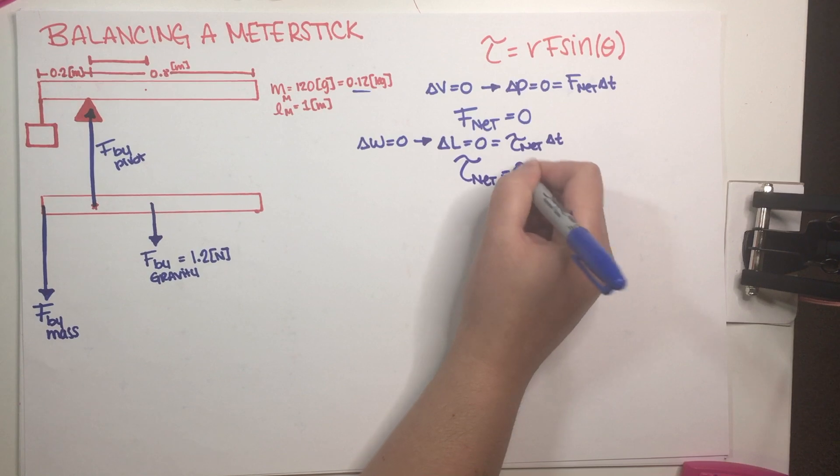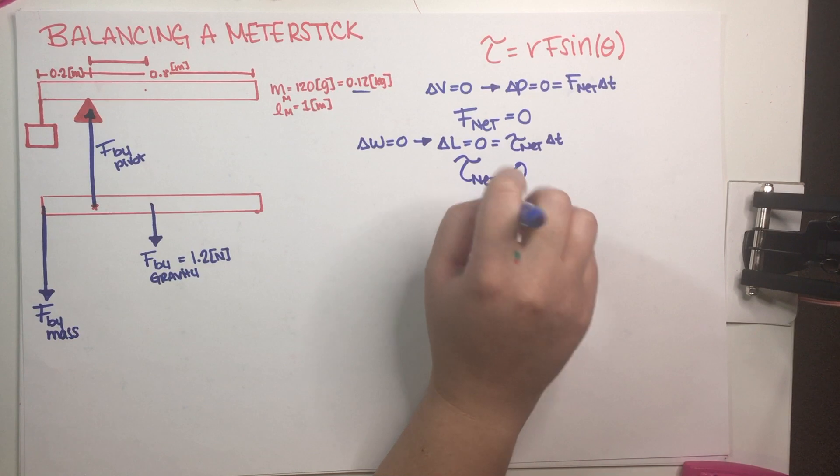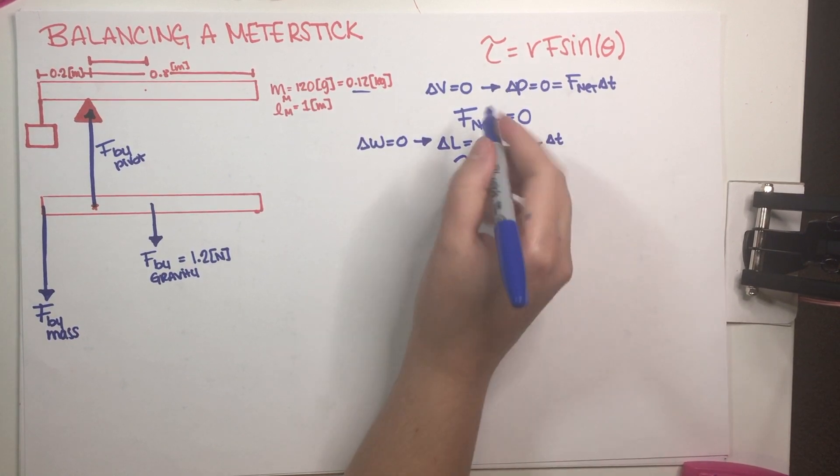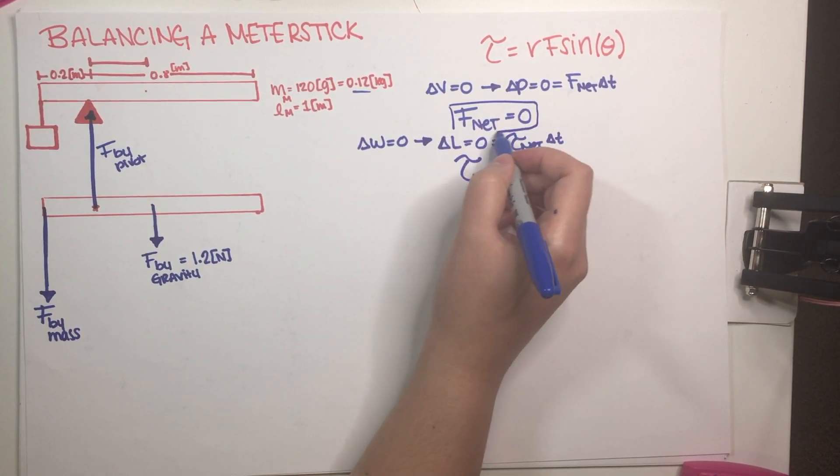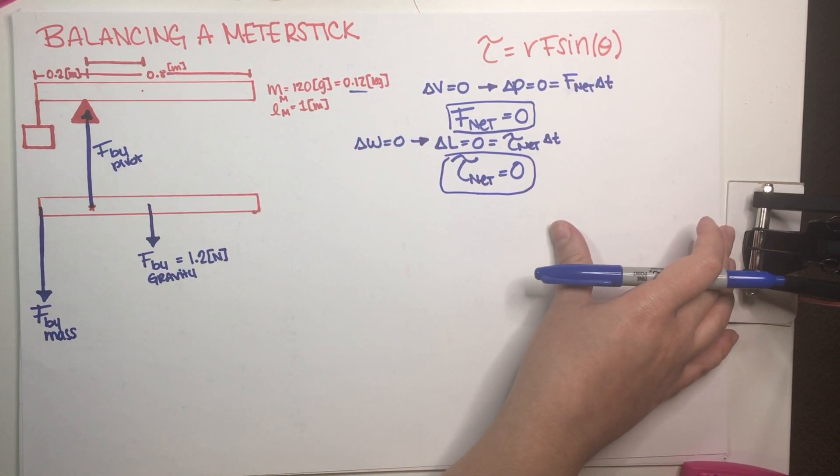So if the thing is not rotating around a pivot point, that basically means that your net torque, well, among other things, but in this case, the useful information that we get out of this is that the net torque has to be equal to zero. So these are two very important pieces of information that we're supposed to get from this problem.